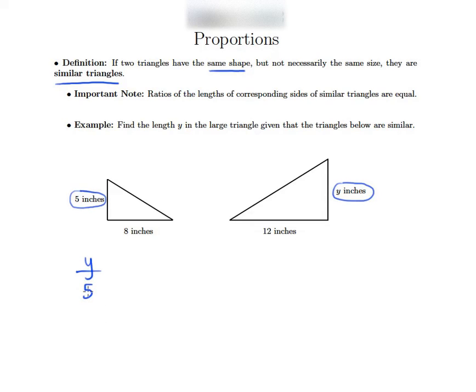So if I take y over 5, I should be able to find a ratio involving two sides that I know that are corresponding to one another. And that ratio should be equal to y over 5 according to that rule that we were given.